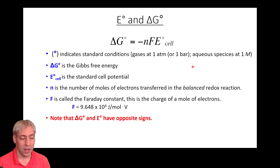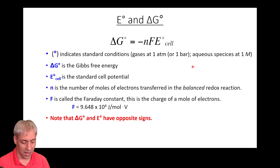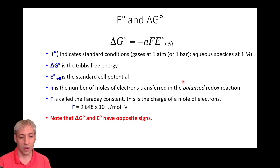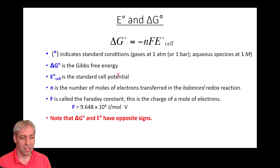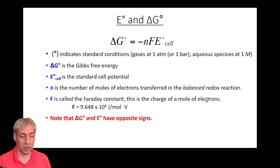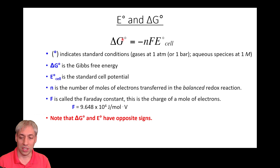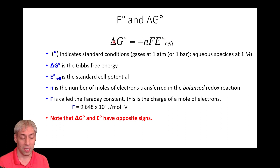Since cell potential is a thermodynamic parameter describing driving force, we can tie it to delta G via the equation: ΔG° = −nFE, where n is the number of moles of electrons transferred and F is Faraday's constant — the charge of a mole of electrons. A positive E-cell gives negative ΔG (spontaneous); a negative E-cell gives positive ΔG (non-spontaneous).